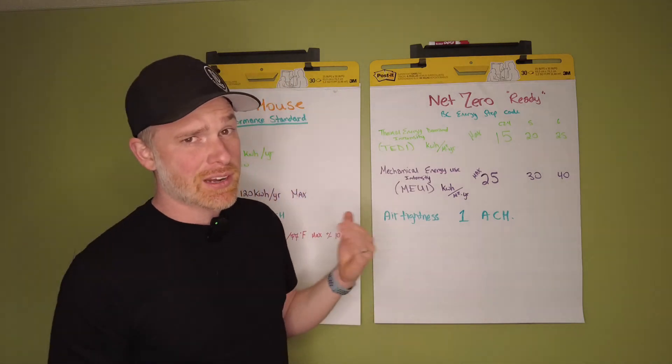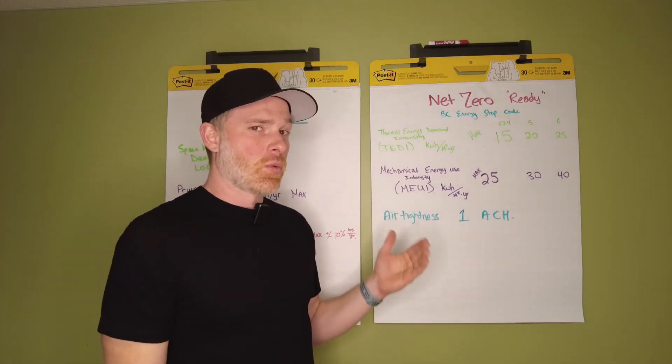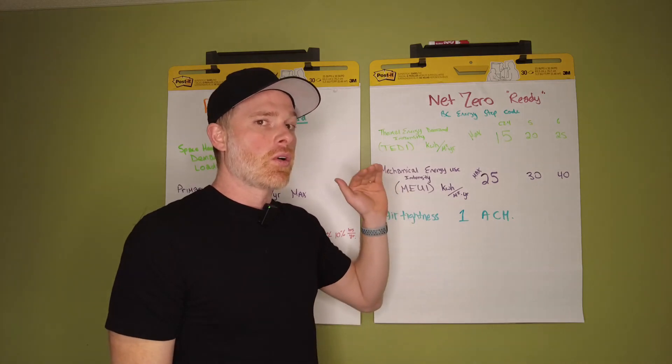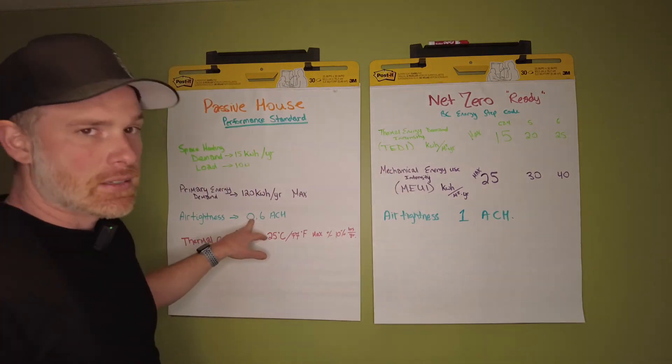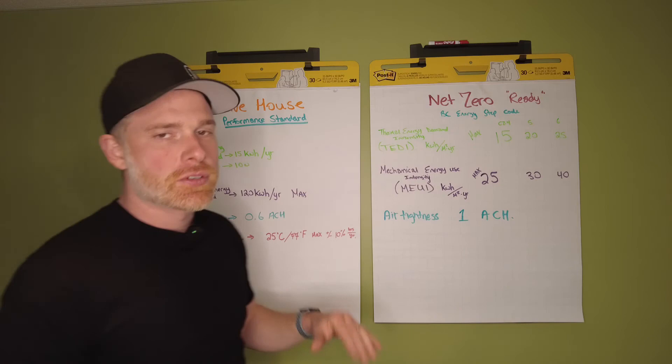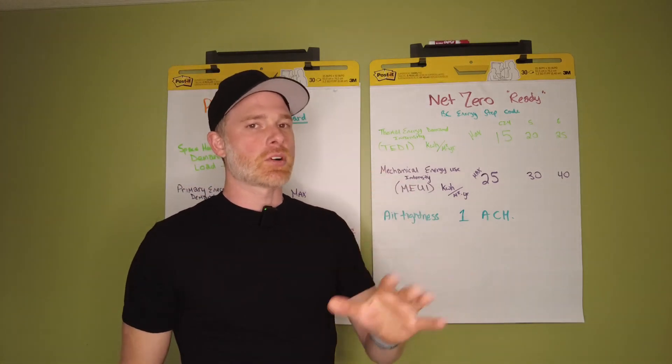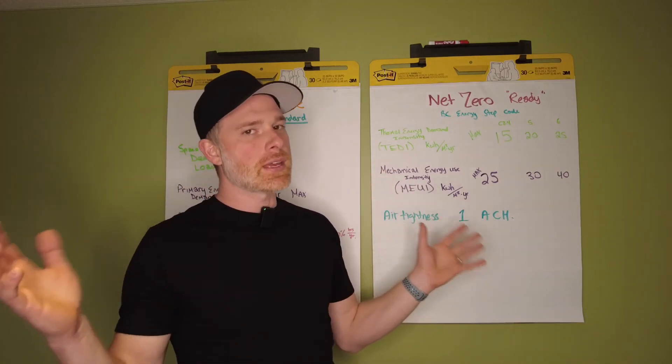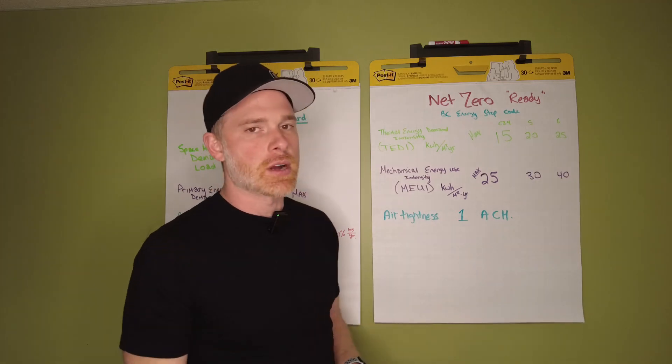As far as air tightness goes, they set a threshold of one air change per hour or less, in contrast to Passive House. Both are fantastic. Typical housing construction is two to three air changes per hour, so this is still a marked improvement.